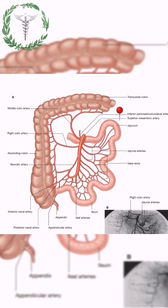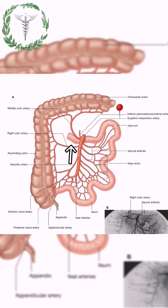We also have the middle colic artery, which supplies the transverse colon. There's also the right colic artery, which supplies the ascending colon. And the fourth branch is the ileocolic artery.